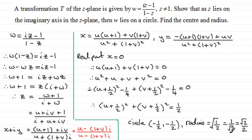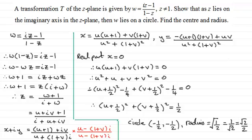You could also be given that z lies on the real axis — in that case it would be the imaginary part that equals zero. Setting the numerator of y equal to zero gives v equals minus u minus 1, which is a straight line. I hope that gives you an idea of how to tackle these types of questions by comparing real and imaginary parts to find the relationship between u and v.